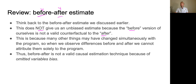Why? Because there are many other things that may have changed simultaneously with the program, so when we observe differences between before and after, we cannot attribute them solely to the program. If we see that somebody who took part in a job training program had a higher salary afterwards, we don't know what else is happening in the macroeconomic context. Maybe the GDP of the whole country is rising and everybody's getting richer. So we have omitted variables bias — OVB. The before-after estimate: no bueno, does not work.